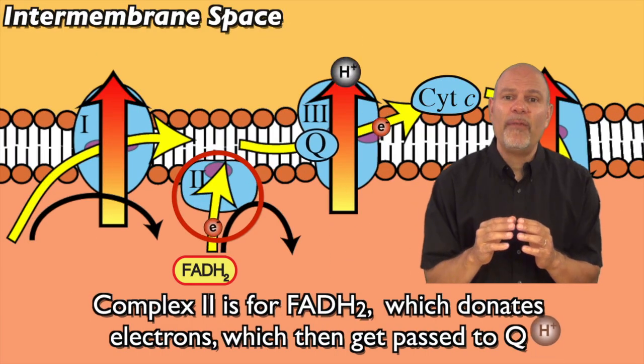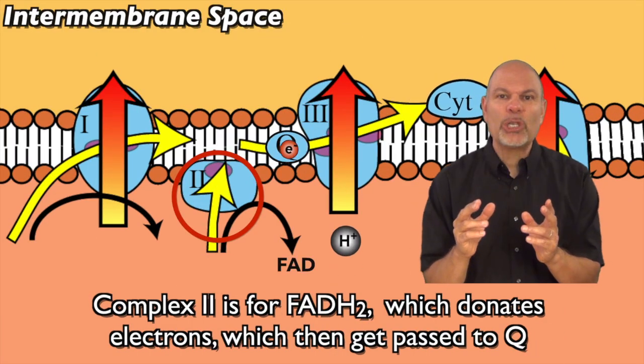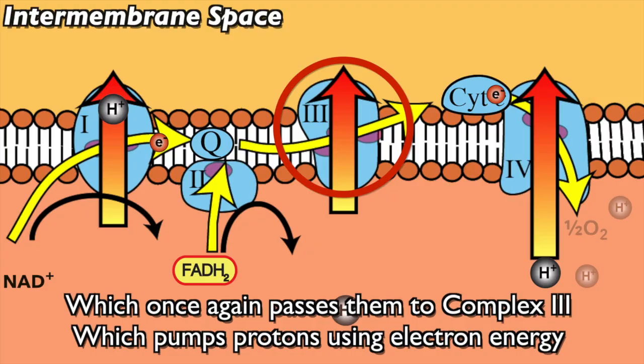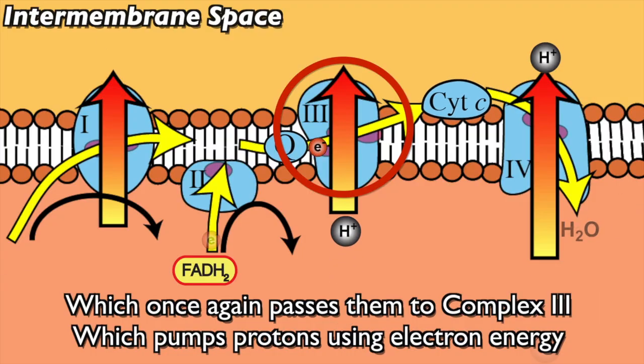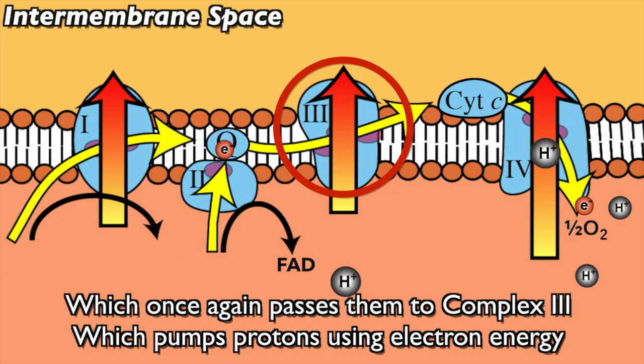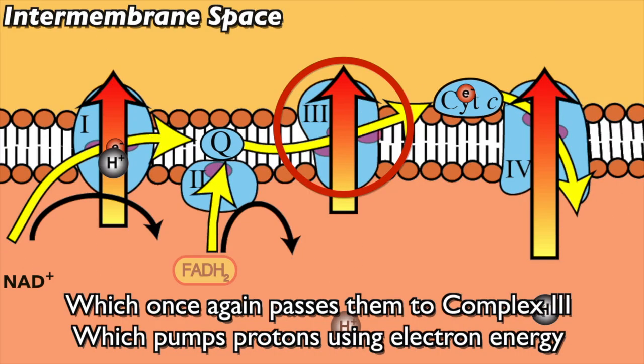Complex two is for FADH2, which donates electrons that then get passed to Q, which once again passes them to complex three, which pumps protons using electron energy.